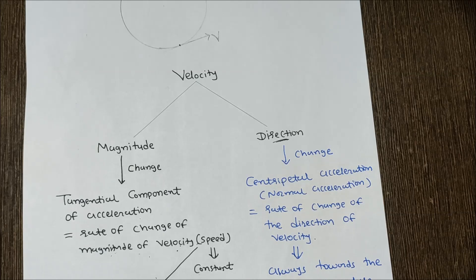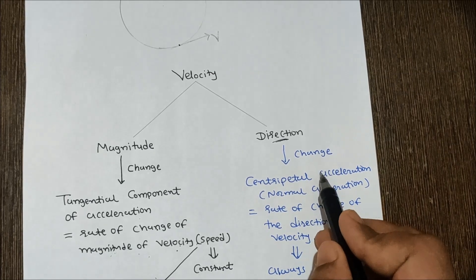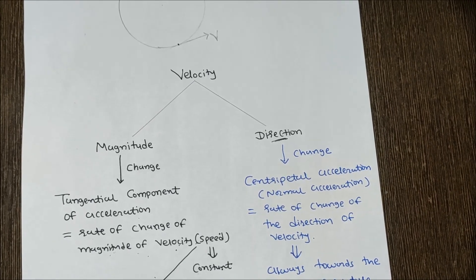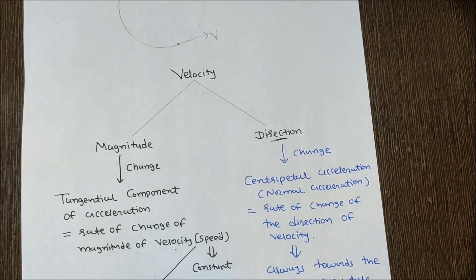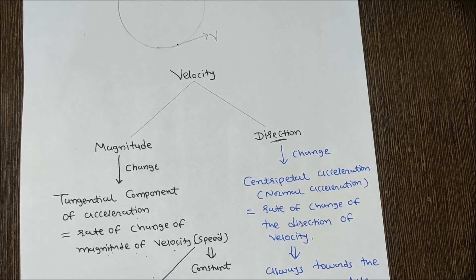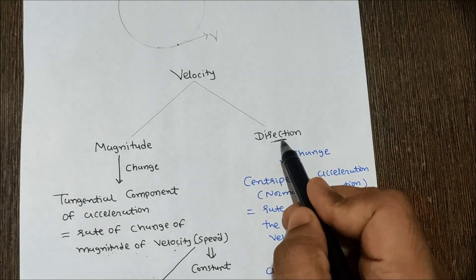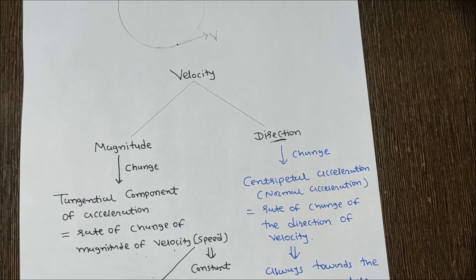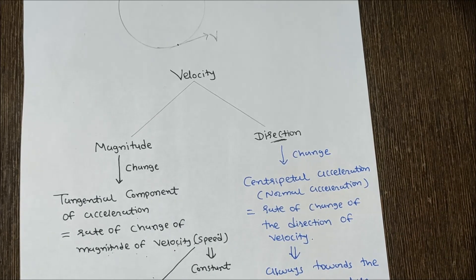When the path is straight and not curved, the normal component of acceleration is absent, that means zero. It is not affected by the change in magnitude of velocity. Centripetal acceleration is related to rate of change of direction — if direction is continuously changing, there is always centripetal acceleration, and its direction is always towards the center of curvature.